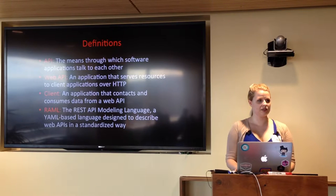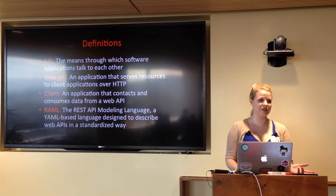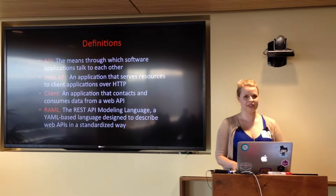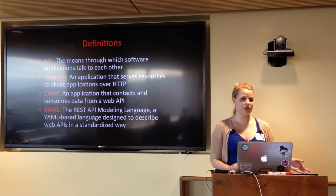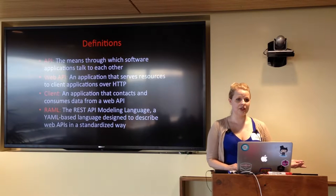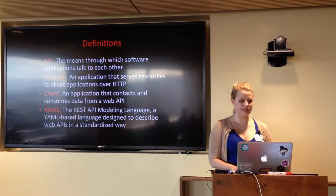In this talk, I'm going to be using both of those terms somewhat interchangeably. Generally, if I say API, I will be referring to a web API, but I'm going to try to be clear about that. A client is any application that contacts and consumes data from a web API. The most common example would be a browser. You can also have things like a calendar app that contacts Google Calendars, or any of a wide variety of things.